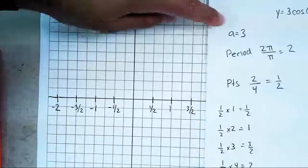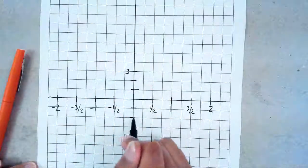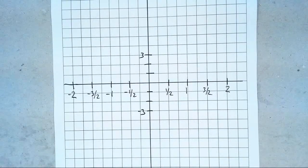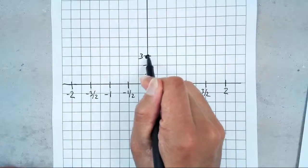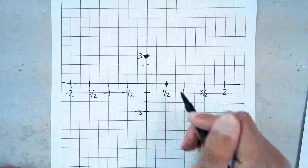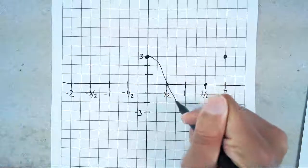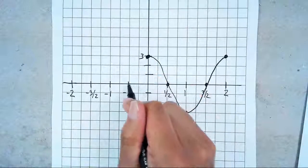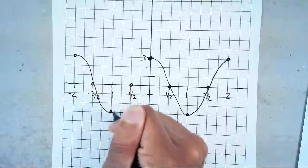Now you have everything. Figure out how high and low you go — your amplitude is 3, so up to 3 and down to negative 3. This is the part where it gets confusing: where do you start? Remember, cosine looks like a cup, so start from the top. The pattern is: top, middle, down, middle, top. Put a little curve into it, then do the same thing on the other side — top, middle, down, middle, top. And that's your two periods of cosine.